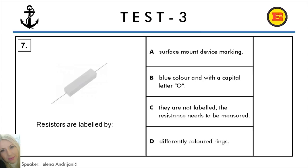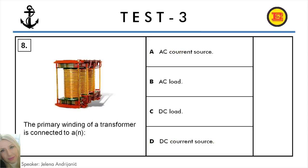Question number 7. Resistors are labelled by: A: Surface mount device marking, B: Blue colour and with a capital letter O, C: They are not labelled, the resistance needs to be measured, D: Differently coloured rings. And here we have two correct answers: A: Surface mount device marking, and D: Differently coloured rings.